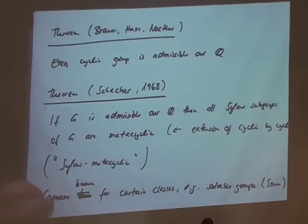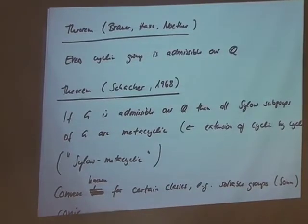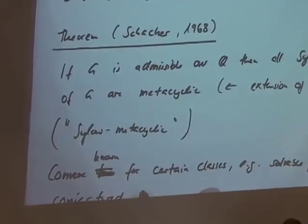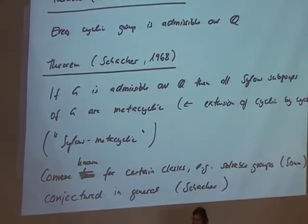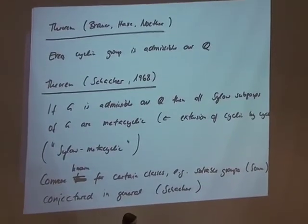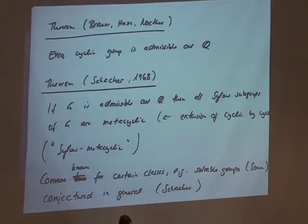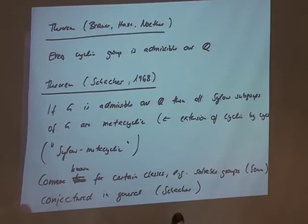The most far-reaching result in this direction for general groups is due to Schur, showing the converse is true for solvable groups: if a solvable group has all Sylow subgroups metacyclic, then it's admissible over Q. That's not the end of the story — there are groups that are Sylow-metacyclic but not solvable, like S₅, which is known to be admissible but not solvable. Schacher conjectured that the converse should be true in general. There is a similar conjecture and theorem for function fields over finite fields.